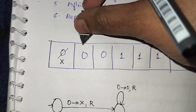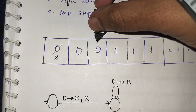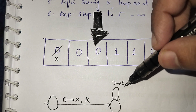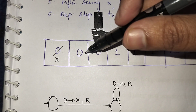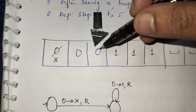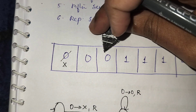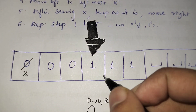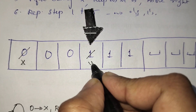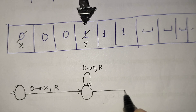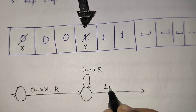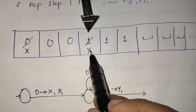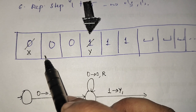Again moving the pointer towards right — again seeing a 0, don't do anything, keep moving towards right. That's why I put it in the self loop. N number of 0s in the right direction: just keep as it is and move towards right. Whenever I see a 1, I need to replace it with y. After replacing it with y, I need to find out the next 0 and corresponding 1.